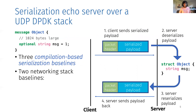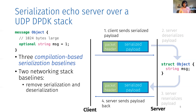We ran a simple serialization echo server over a UDP DPDK stack. Concurrent clients send a serialized payload to the server, who deserializes the payload, re-serializes the same payload, and sends it back. We compare it to Protobuf, CaptainProto, and FlatBuffers — three compilation-based serialization libraries. We additionally compare it to removing serialization and deserialization from the app and a zero-copy UDP DPDK stack.